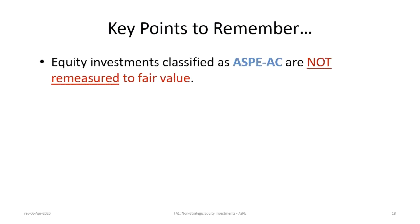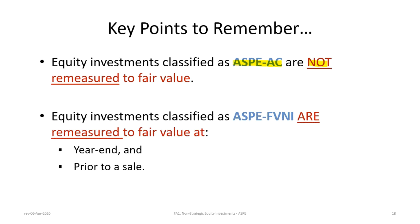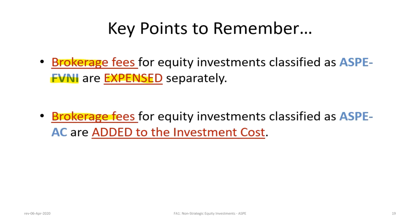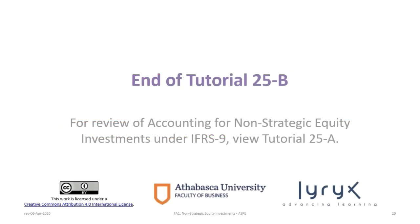To close, here are the key points to remember. Equity investments classified as ASPE amortized cost are not remeasured to fair value, unlike FVNI under both ASPE and IFRS, and unlike FVOCI under IFRS. Any brokerage or transaction fees for FVNI investments are expensed separately — the same as under IFRS. For AC or amortized cost investments, transaction fees are added to the investment cost and included in the average cost calculation. That concludes Tutorial 25B. If you have not yet reviewed Tutorial 25A on accounting for investments under IFRS 9, you are advised to do so.